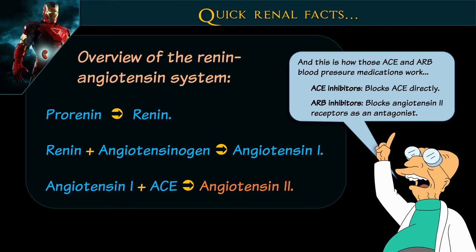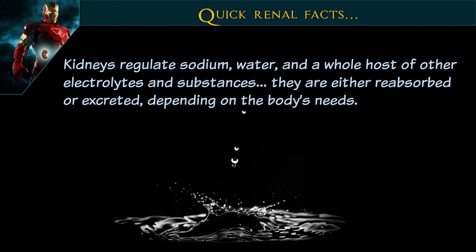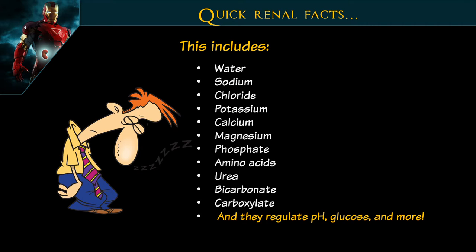The kidneys filter and regulate how much sodium, water, and a whole host of other substances are in the body, then excrete what we don't need. The things they mainly handle are water, sodium, chloride, potassium, calcium, magnesium, phosphate, amino acids, urea, bicarbonate — and they regulate pH and glucose. You can see that end-stage renal disease patients are affected on so many different levels in their daily living, and if they miss one appointment, you can see how this starts to magnify and cause problems.